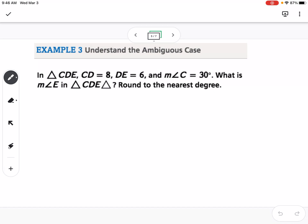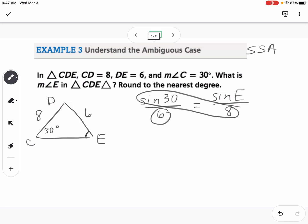So now understanding the ambiguous case. So we talked about the ambiguous case is going to be when you have side-side angle. Okay, so this situation here. So we have triangle CDE. So side CD is 8. Side DE is 6. And measure of angle C is 30 degrees. So you can see how that's set up is side-side angle. And we're trying to find measure of angle E. So this angle right here. So what we have to be careful of, so we can approach this just like we have approached the other ones. So we can say sine of 30 over 6 is equal to sine of E over 8. So if I cross multiply and divide, I'm going to get that angle E is 42 degrees.